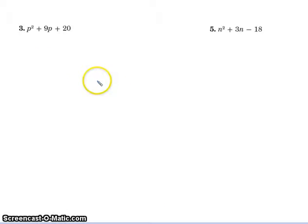All right, so if we're going to factor number three, we have p squared plus 9p plus 20.